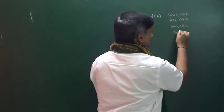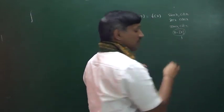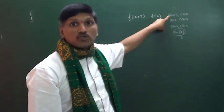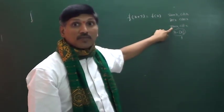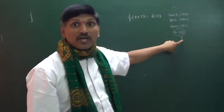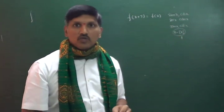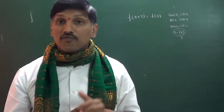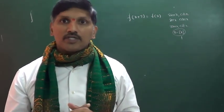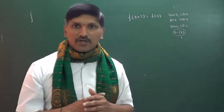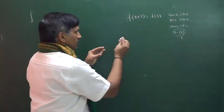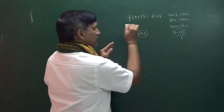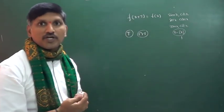Tan x and cot x are periodic functions with period π. And x minus the integral part of x is a periodic function with period 1. In all those cases, f(x+2π) gives f(x), f(x+π) gives f(x), and f(x+1) gives f(x). So f(x+t) = f(x), and the function is said to be periodic with period t. The least positive real number t is called the fundamental period.